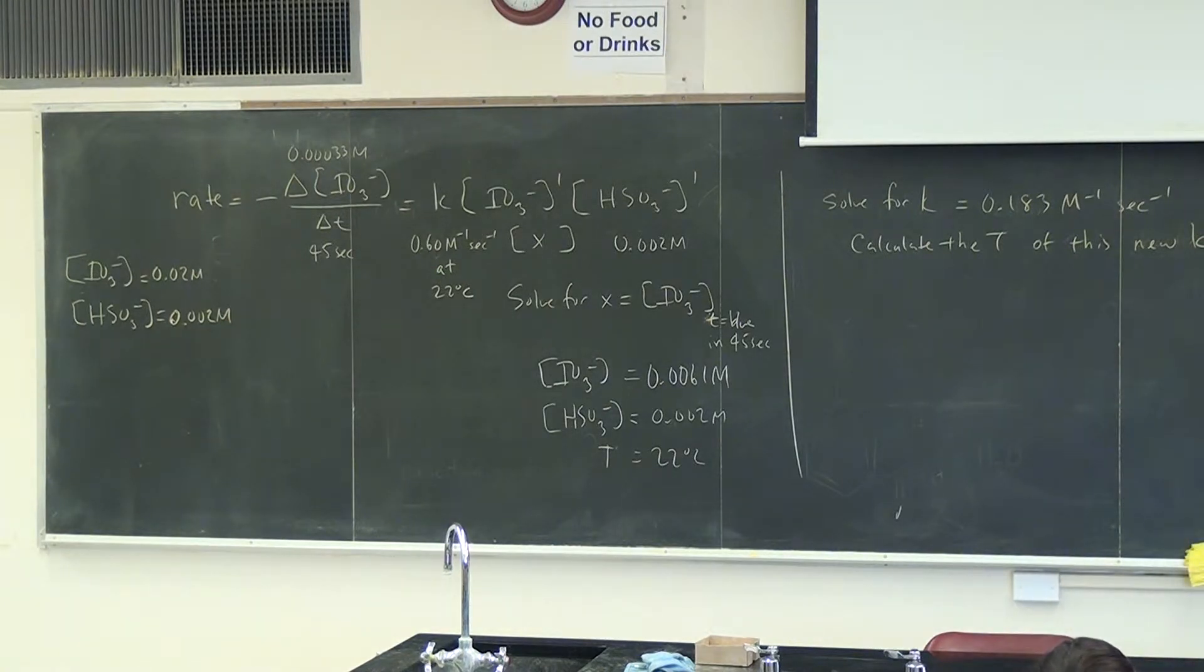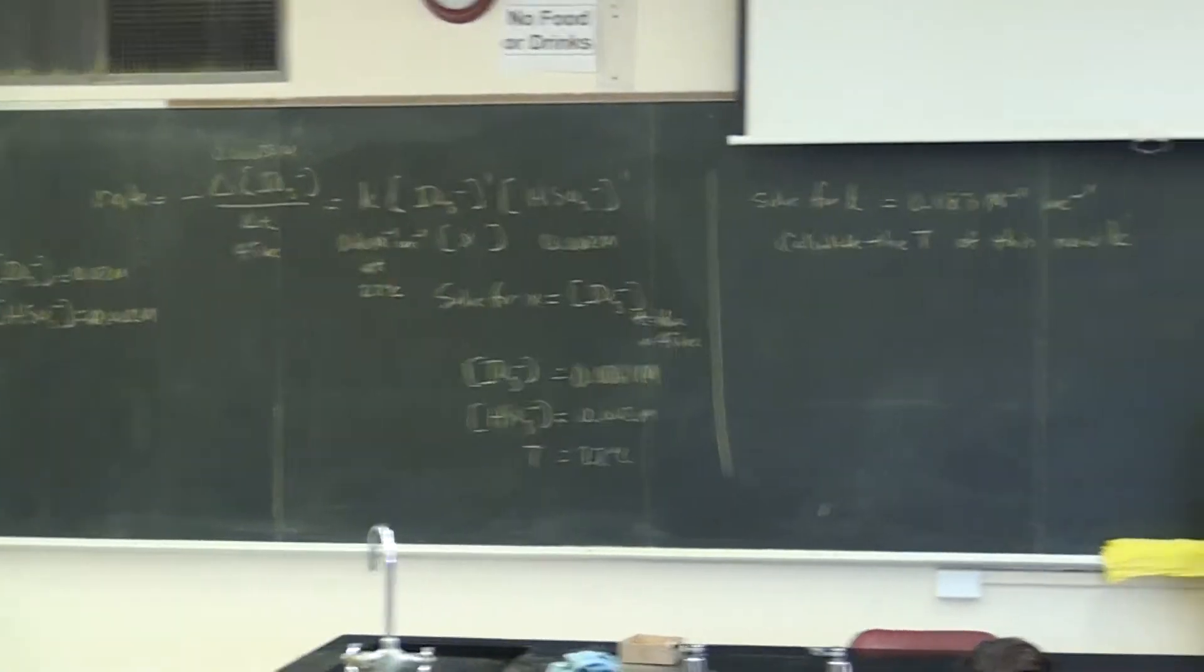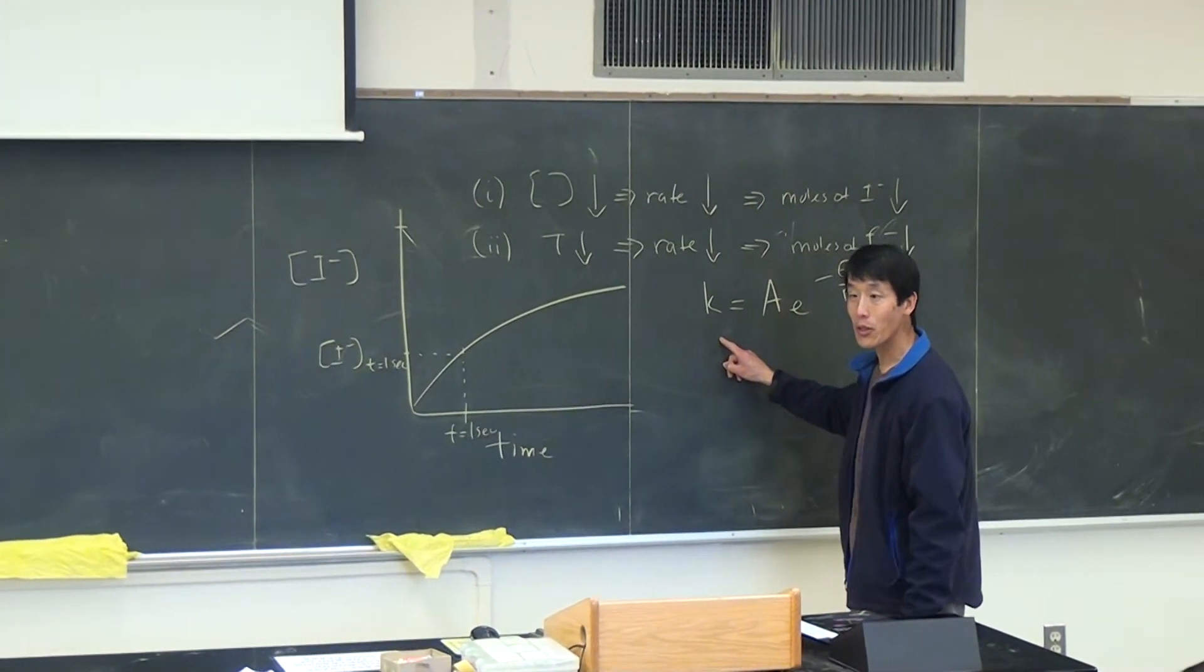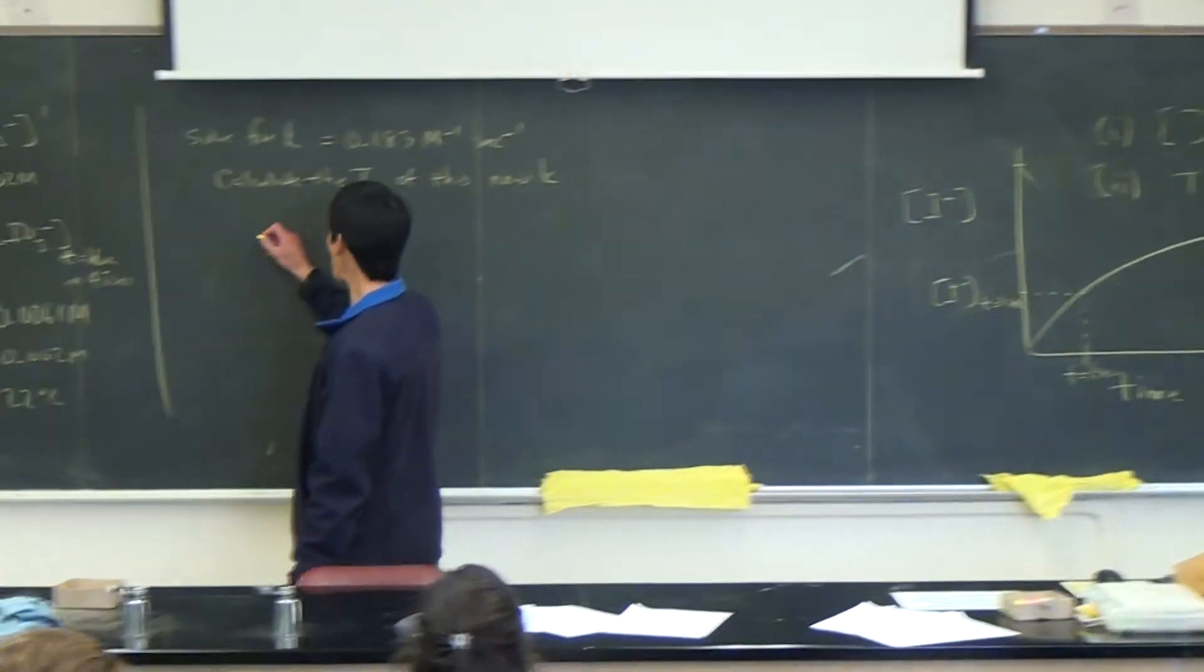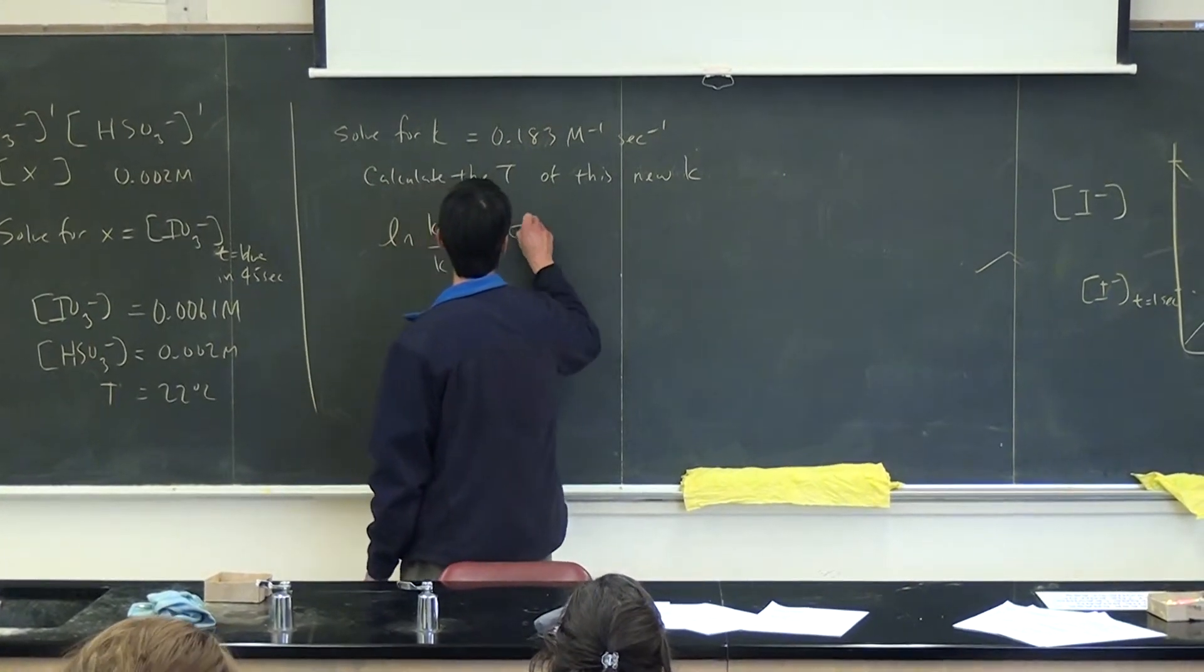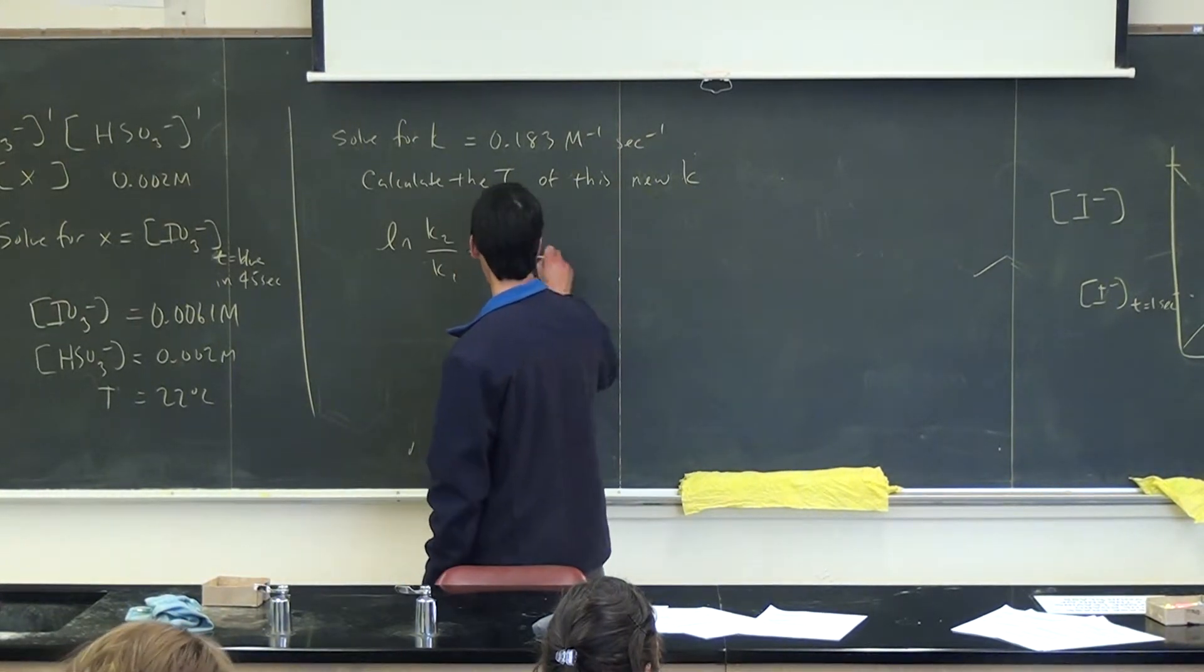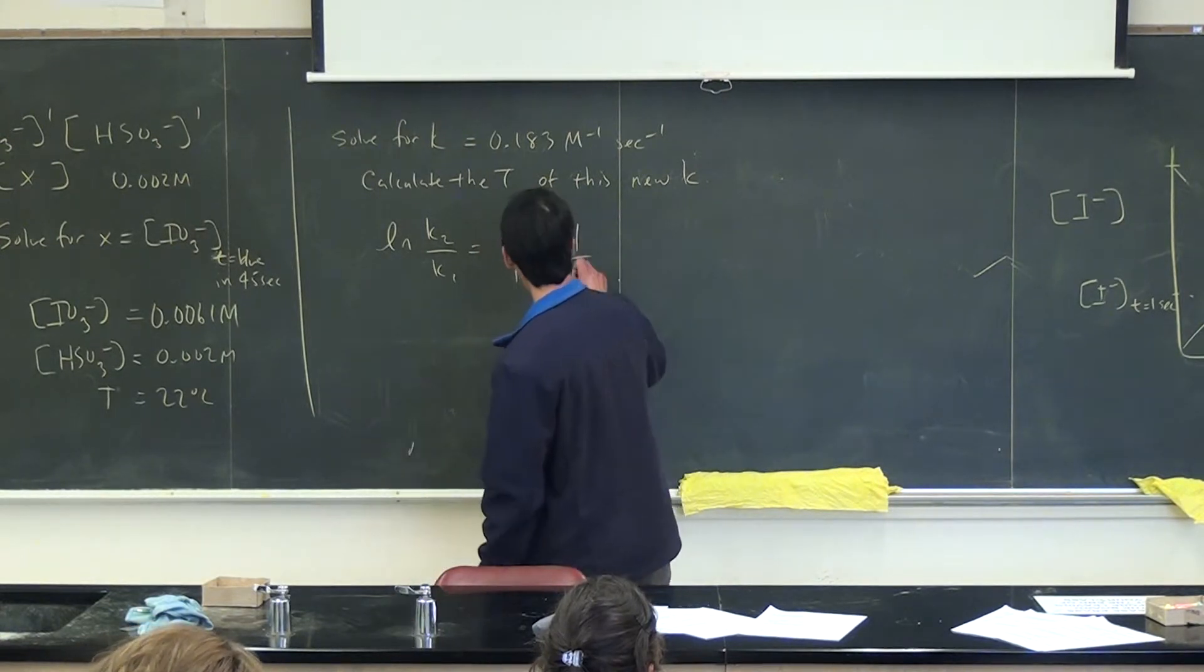So once you know K, then you have to figure out, you have to calculate the temperature of this new K value. You can do that using the Arrhenius equation. So if you have, based on this equation here, take the natural log of both. Anyway, this is in the textbook in chapter 15. If you use this equation, the natural log of K, it's K2 over K1, is equal to Ea over, let's see, Ea over R, 1 over T1 minus T2.